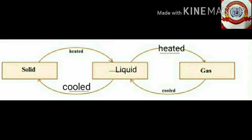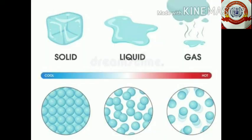Substances undergo change of state when they absorb or release heat energy. On absorbing heat energy, they change from the solid state to the liquid state and then to the gaseous state. Substances get converted from the gaseous state to the liquid state and then to the solid state by releasing heat energy.